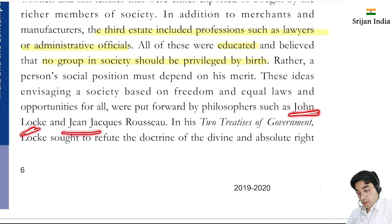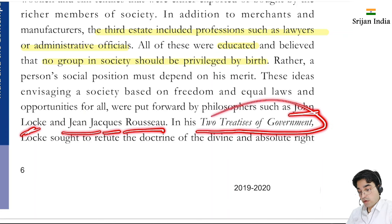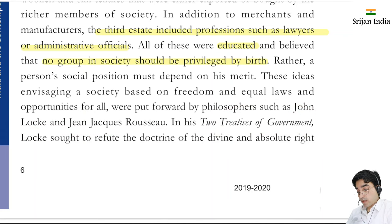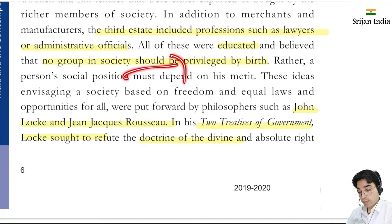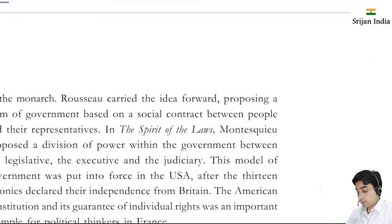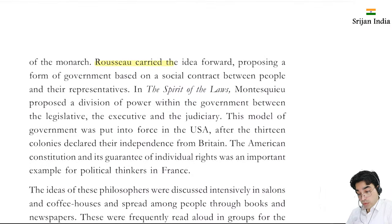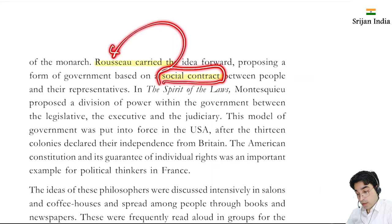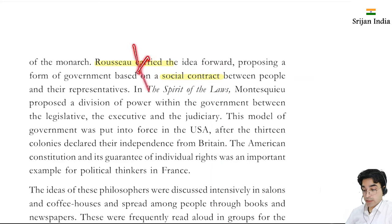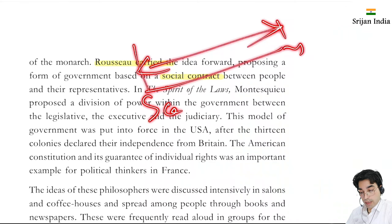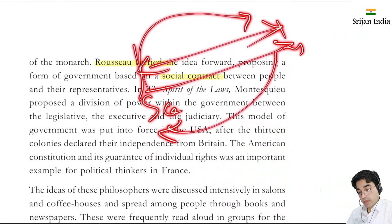John Locke, Jean-Jacques Rousseau, and his Two Treatises of Government - philosophers are thinkers who give thoughts. They refuted the doctrine of the divine and absolute right of birth - rights should not be determined by birth alone. Rousseau carried the idea forward, proposing a form of government based on a social contract between people and their representatives - what they deliver to each other.